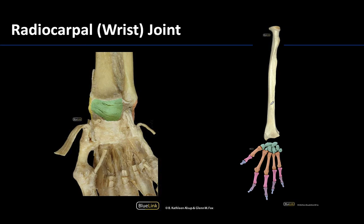Starting with the radiocarpal or wrist joint, this joint is formed by the articulation of the distal end of the radius — the articular surface of the radius — and the proximal row, at least three of the four carpal bones, so those wrist bones, all except for the small pisiform which is a bit more anteriorly placed and not directly involved with this articulation.